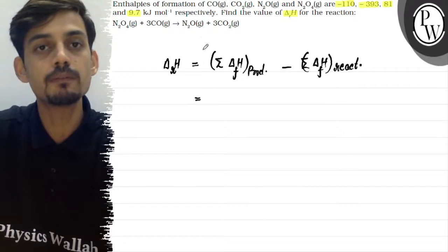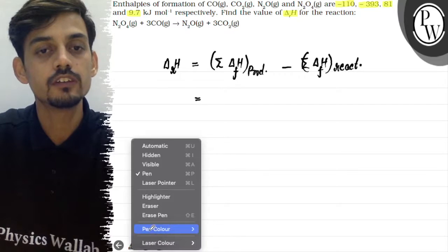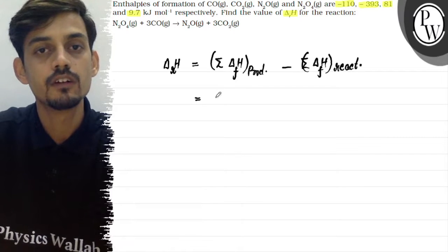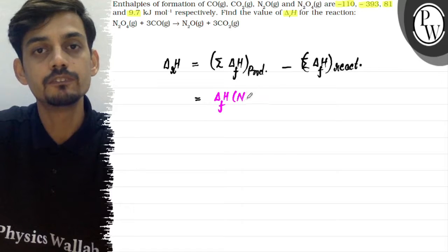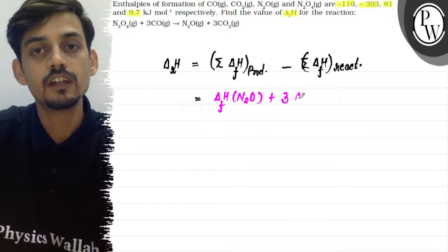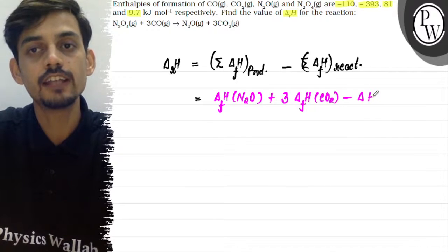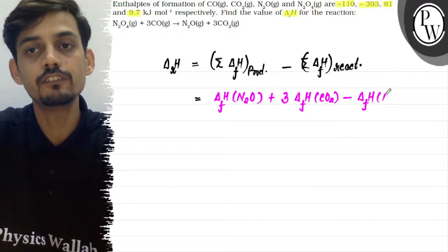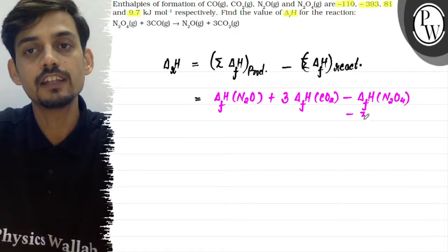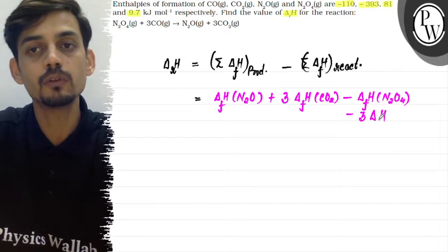On the product side, we have one mole of N₂O, so we take one times the enthalpy of formation of N₂O, plus three moles of CO₂, giving three times the enthalpy of formation of CO₂. On the reactant side, we subtract the enthalpy of formation of N₂O₄ and three times the enthalpy of formation of CO.